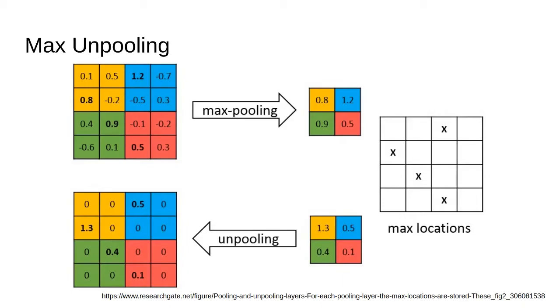Then, when applying max unpooling, that location is filled, and the others are set to 0. There is a variation of this approach, which fills all the pixels with the same value.